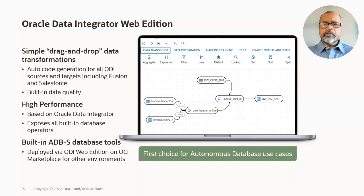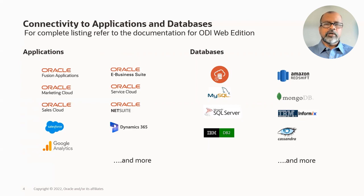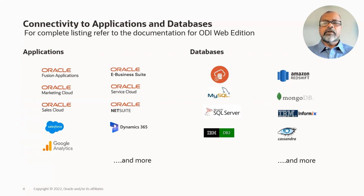A data integration tool needs to have a wide range of connectivity to data sources and targets. ODI Web Edition can connect to various applications such as Oracle Fusion SaaS, Oracle Marketing Cloud, Sales Cloud, Service Cloud, EBS, NetSuite, and even third-party applications such as Salesforce, Microsoft Dynamics, Google Analytics, and much more. It can also connect to Oracle and non-Oracle databases. This list is not complete — refer to the documentation for the full list. Note that connectivity can be further extended using third-party JDBC drivers.